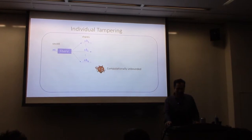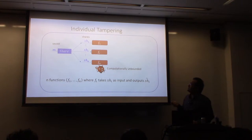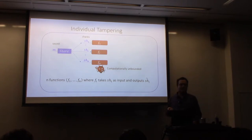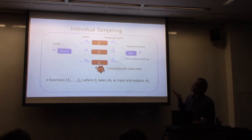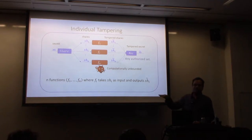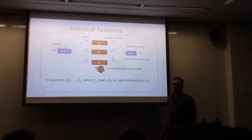The first tampering class is individual tampering. The adversary is computationally unbounded, but the tampering function is represented by N individual functions F1 up to FN, each acting independently on its own share: F_i acts on SH_i to give SH-tilde_i. All shares are tampered but individually and independently of each other. Then you reconstruct to get M-tilde, and we require M-tilde to be either the same as M or have a distribution independent of M.